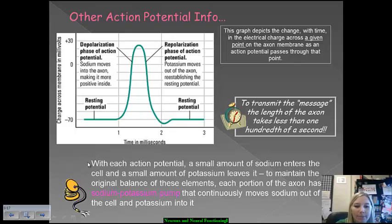So, what we have down here, just to reiterate this, there is a small amount of sodium that will enter the cell of these axons and a small amount of potassium that will exit these cells. So, to maintain the original balance of these elements, each portion of the axon in a neuron has something called the sodium-potassium pump. This continuously is moving sodium out of the cell and potassium into it, so that way there is always that constant level. The neuron will always fire on the all-or-nothing principle, and so it will always have enough energy to fire.